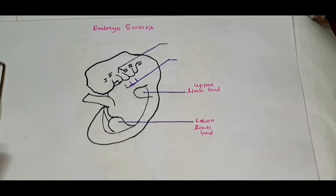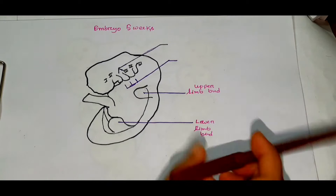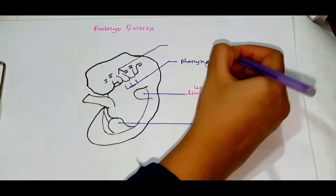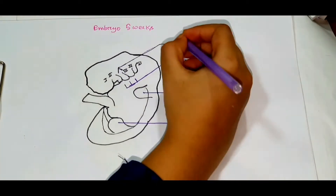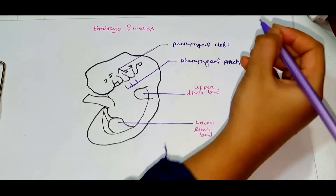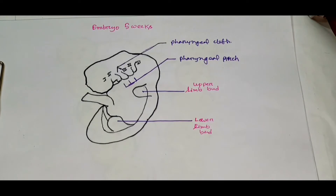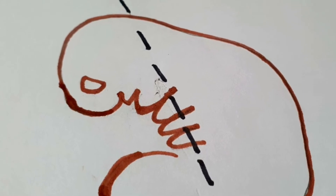Here I have drawn a picture of an embryo aging five weeks — the time when pharyngeal arches, along with the pharyngeal pouches and clefts, appear. These structures are pharyngeal arches, and these grooves are pharyngeal clefts. The human embryo has six pairs of pharyngeal arches: one, two, three, four, and six — number five usually disappears. I will now draw a section of the developing pharyngeal region of the embryo aging five weeks.